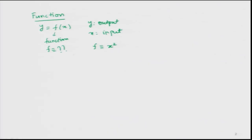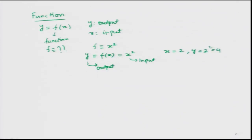When defining a function, I first have to specify what f is. For example, if f has the form x², then the function becomes y = f(x) = x². This means that as soon as I give values of x as input, I get a particular value of y as output. For example, if x = 2 then y = 2² = 4, and if x = 3 then y = 3² = 9.